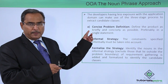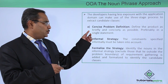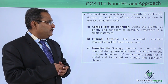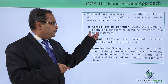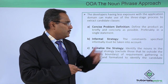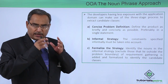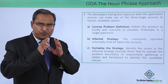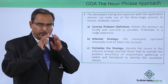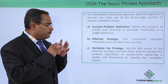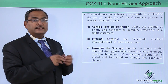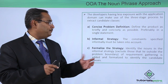Here we have a three-stage approach. The first one is concise problem definition — define the product as briefly and concisely as possible. That means we should define the software product or software problem. The problem statement should be very concise and must be given briefly, preferably in a single statement if possible.